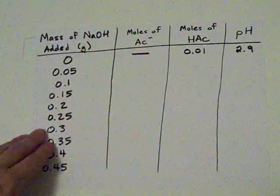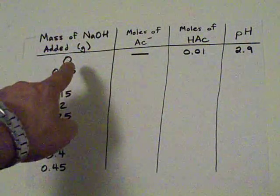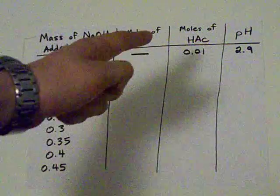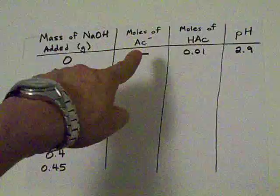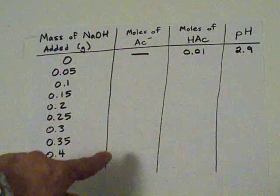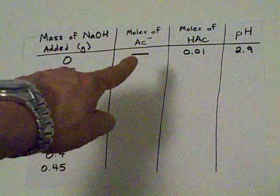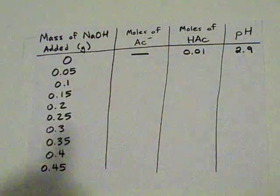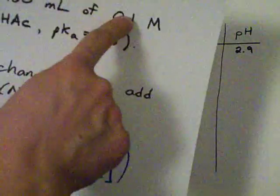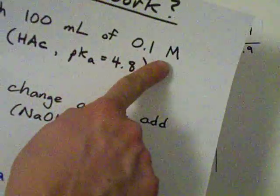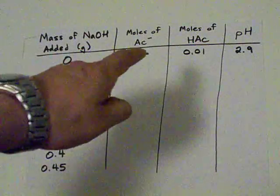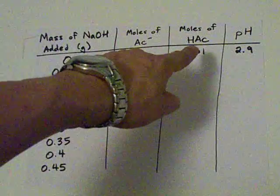This is the amount of NaOH that we're going to add, and we're going to do a calculation for every single one of these. This here is going to be the moles of acetate that we formed. This is the conjugate base. This is the moles of acid. Now notice we're starting with straight up 0.1 moles per liter and 0.1 liters. So we're starting with 0.01 moles of the acid.